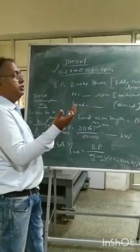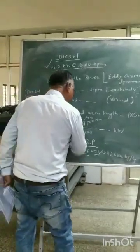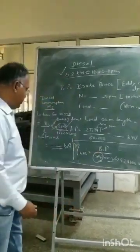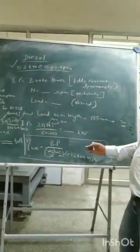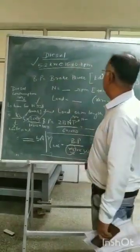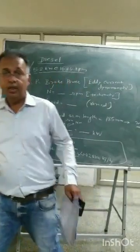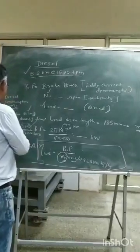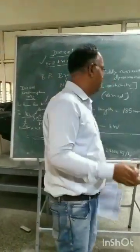One can also take a suitable calorific value by actually measuring it. To calculate the brake thermal efficiency, the observations you need are: fuel consumption of the engine — that means recording the time for 10 ml of fuel — the load of the engine, and the speed of the engine. You will not require any other reading. You need only fuel consumption and the corresponding dynamometer readings.